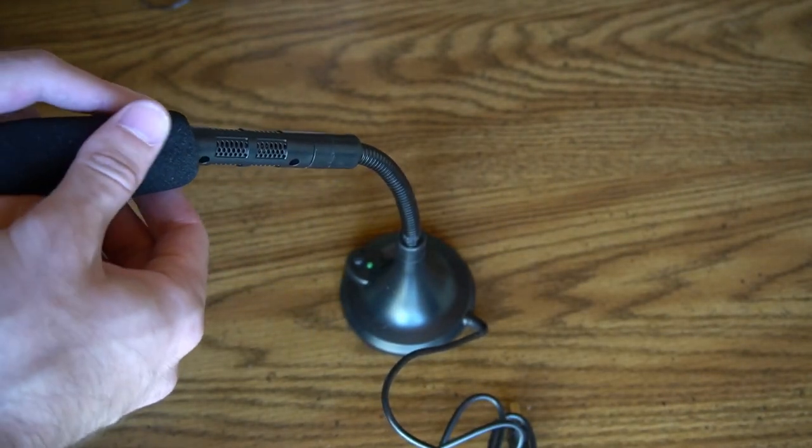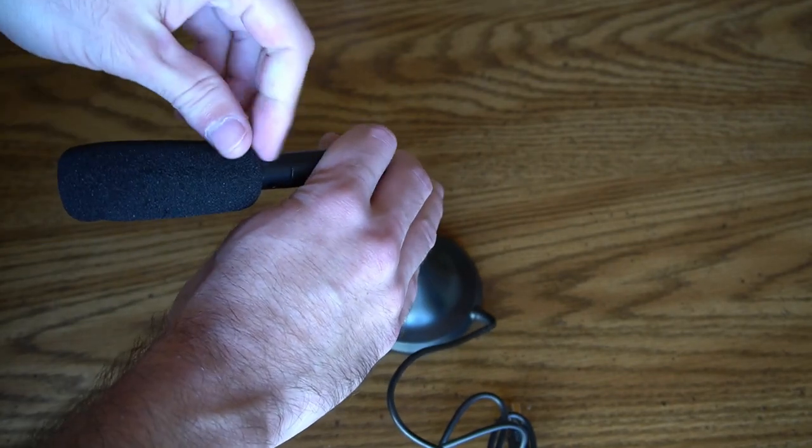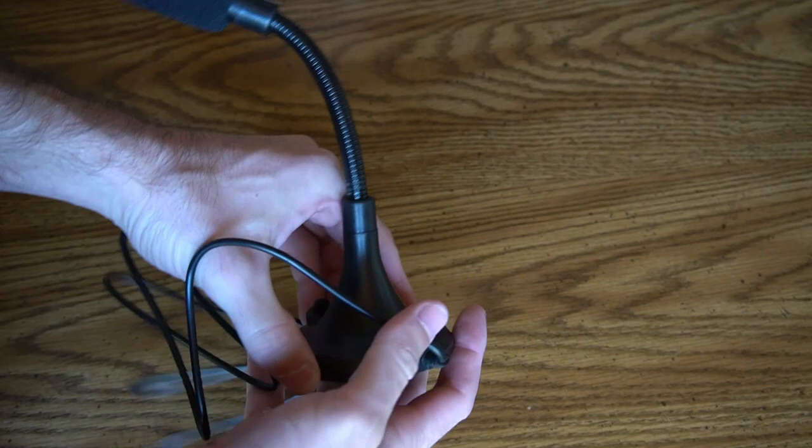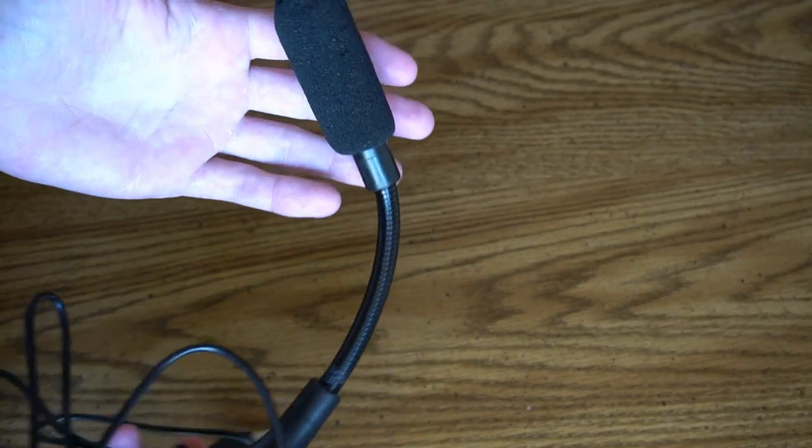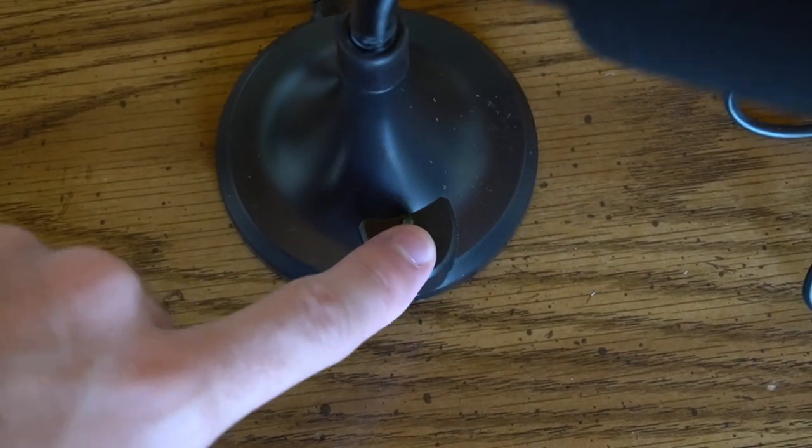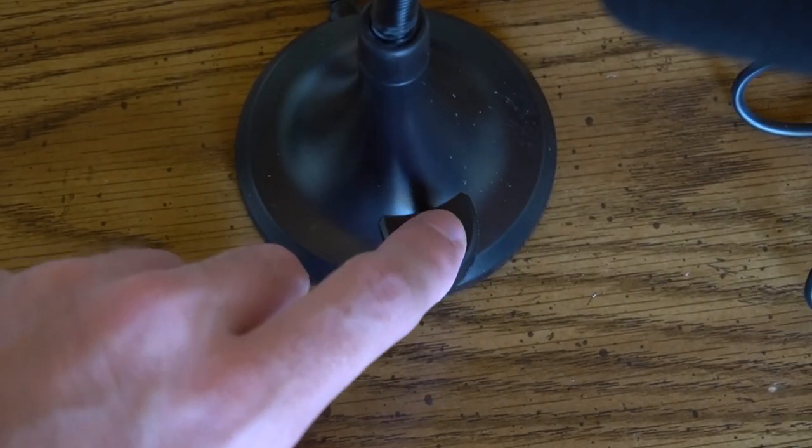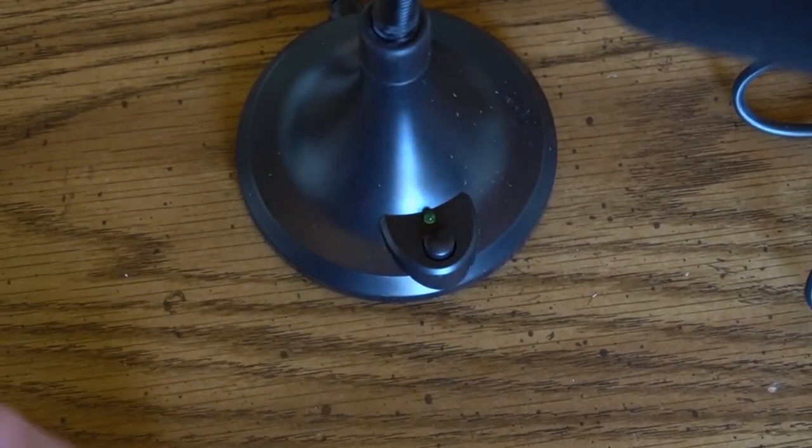This microphone is really easy to use. You just plug in the USB cable to your PC and then press the button on the microphone itself to power the unit. Once the button is turned on, you can begin speaking and the microphone will pick up your voice. When the microphone is powered on, a green light will be emitted.